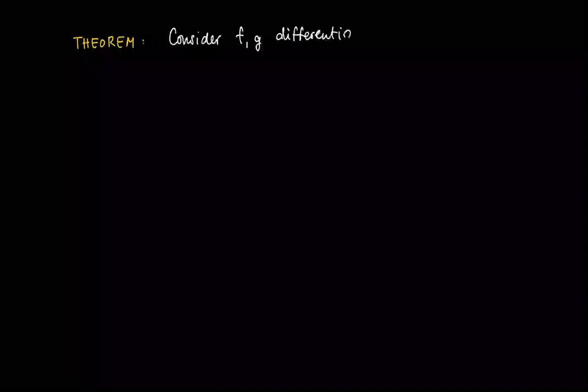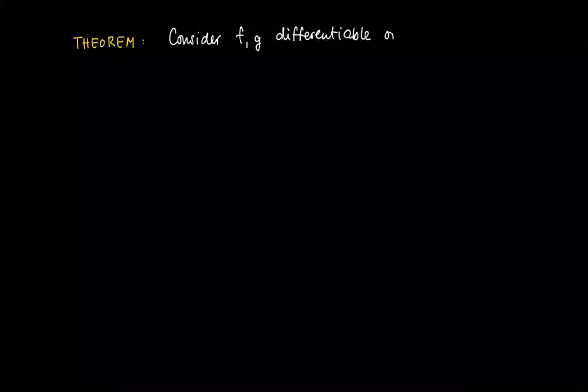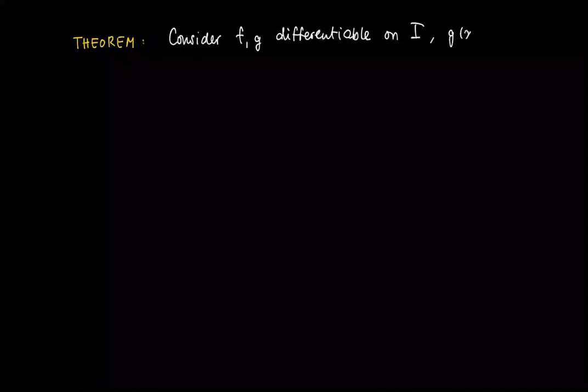We will use the previous clip as a tool to prove the following, which is also referred to as the quotient rule. Suppose we have two differentiable functions on some interval I, and we know that g of x is never zero on this interval.